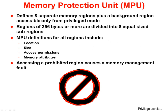The Memory Protection Unit defines eight separate memory regions, plus a background region that's accessible only from privileged mode. Regions 256 bytes or larger in size get divided into eight equal-sized sub-regions. MPU configuration can be relatively simple or very complex, depending on your goal. You can configure different attributes for each region and sub-region — for example, allow code execution, allow data, allow writes, etc. Accessing a region in a prohibited way will cause an immediate memory management fault.